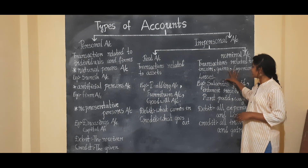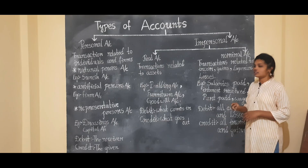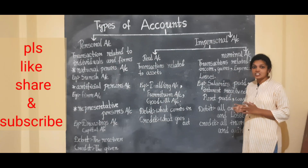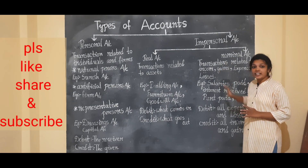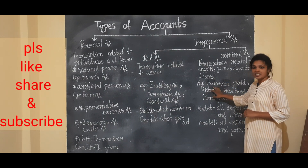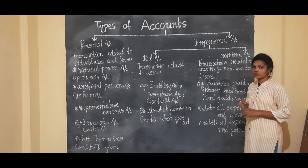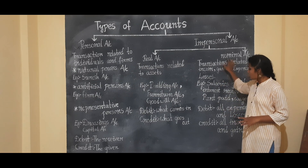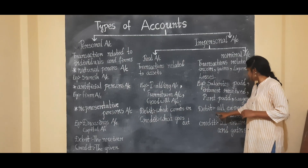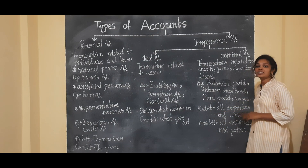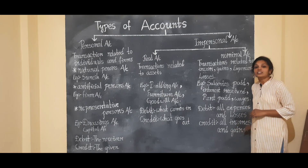Nominal account covers transactions related to income, gains, expenses, and losses. Examples include salaries paid, interest received, and rent paid. The debit and credit rules for nominal account are: debit all expenses and losses, credit all incomes and gains.